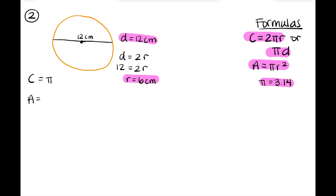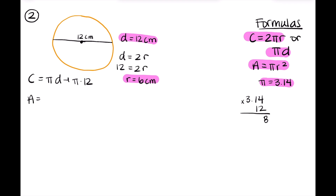Since we are given the diameter for circumference this time, let's use the pi D equation. Substituting in 12, we get C equals pi times 12. Pi is approximately 3.14, so we do 12 times 3.14, and we end up getting 37.68. So our answer for the circumference is 37.68 centimeters.